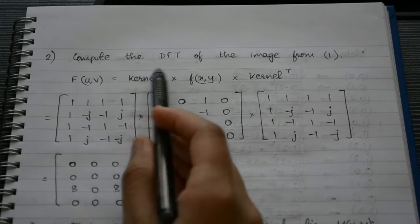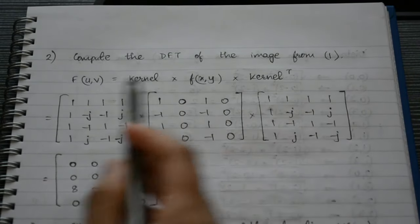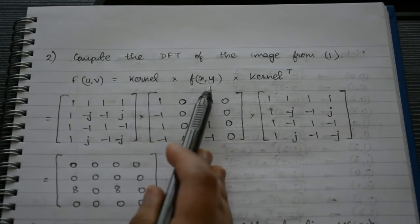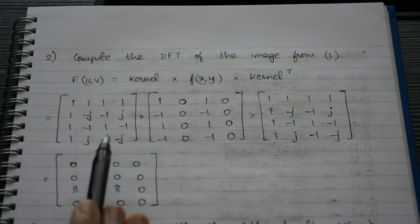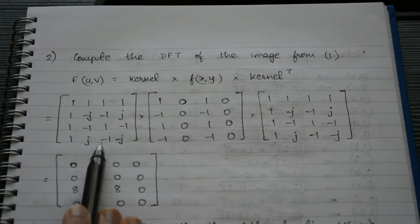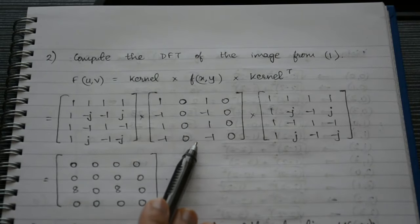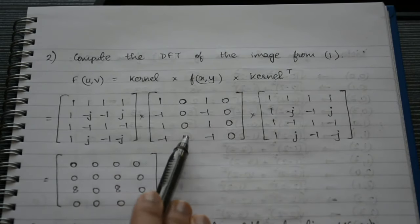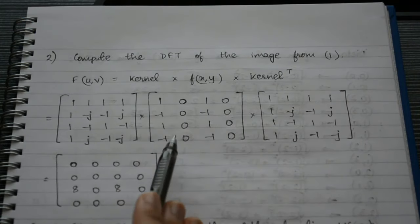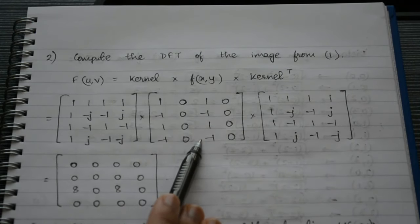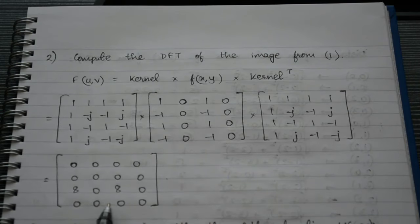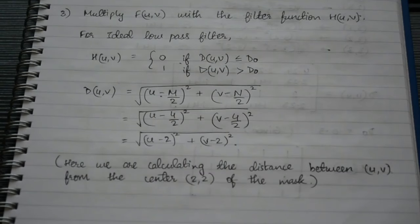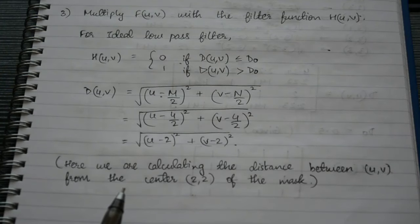Step 2: compute the DFT of the image from step 1. The DFT formula is F(u, v) = kernel × input image × kernel^T. We use a 4×4 kernel because our original image is 4×4. We perform the multiplication and obtain the frequency domain representation F(u, v).